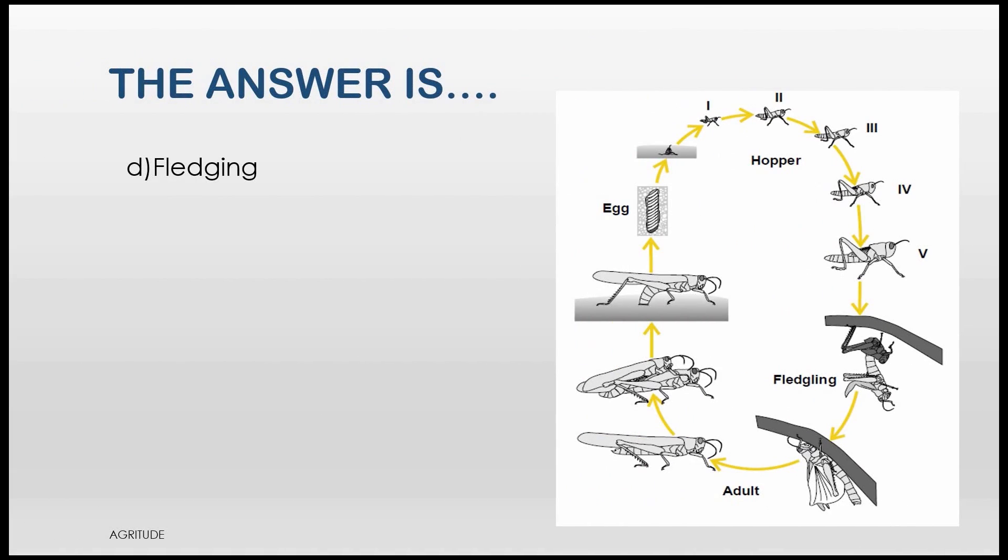The answer is Fledging. Note the spelling here that is F-L-E-D-G-I-N-G. Fledging. And the locusts after Fledging is called as Fledgling or Immature Adult. Here the spelling is F-L-E-D-G-L-I-N-G.